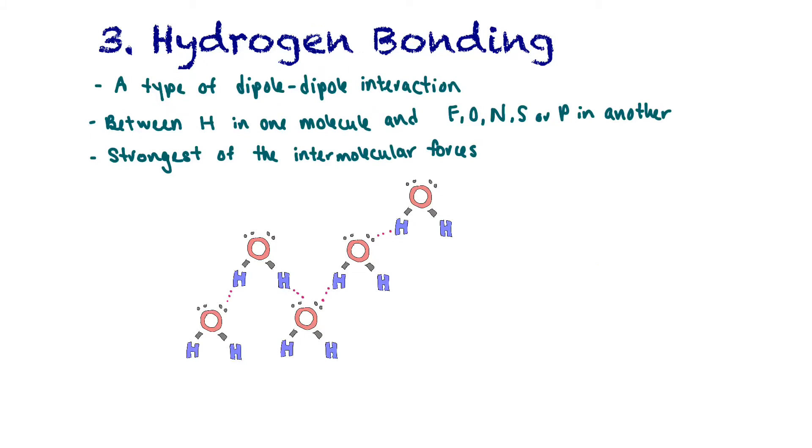Our final type of intermolecular force, and the strongest one, is hydrogen bonding. This is a type of dipole-dipole interaction that's between a hydrogen atom in one molecule and either fluorine, oxygen, nitrogen, sulfur, or phosphorus in another molecule. It's the strongest of the intermolecular forces. In this example, we can see water exhibiting this hydrogen bonding. This negative dipole on oxygen is attracted to a hydrogen, and this hydrogen is being attracted to another oxygen, and so on and so on. This hydrogen bonding actually gives water some very unique properties, which we'll talk about later in this video.